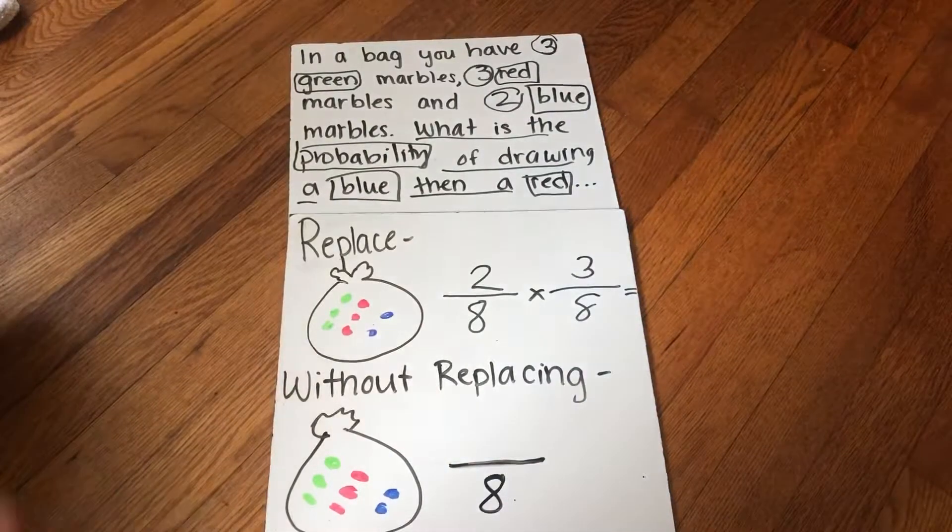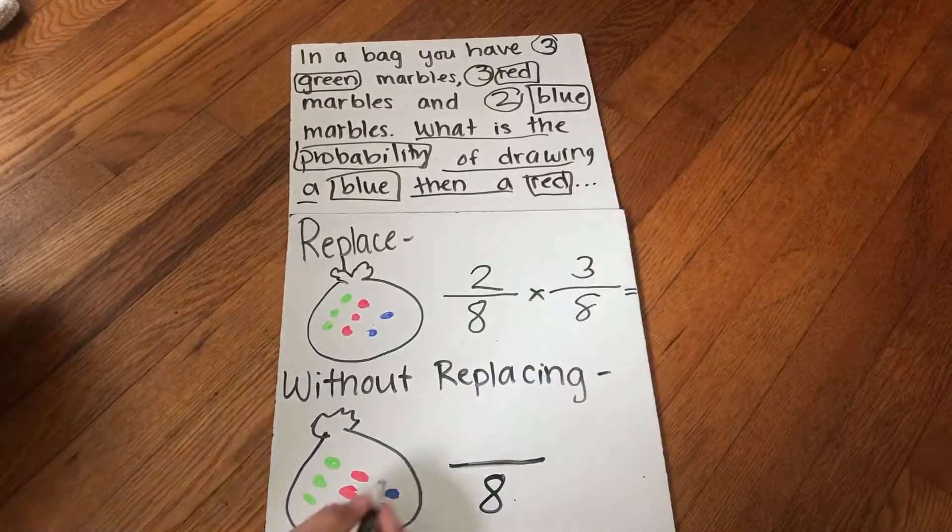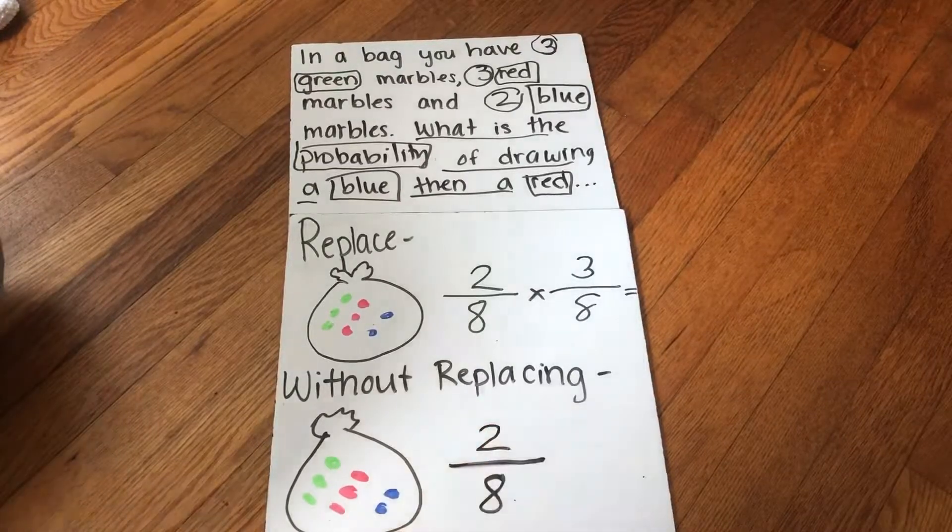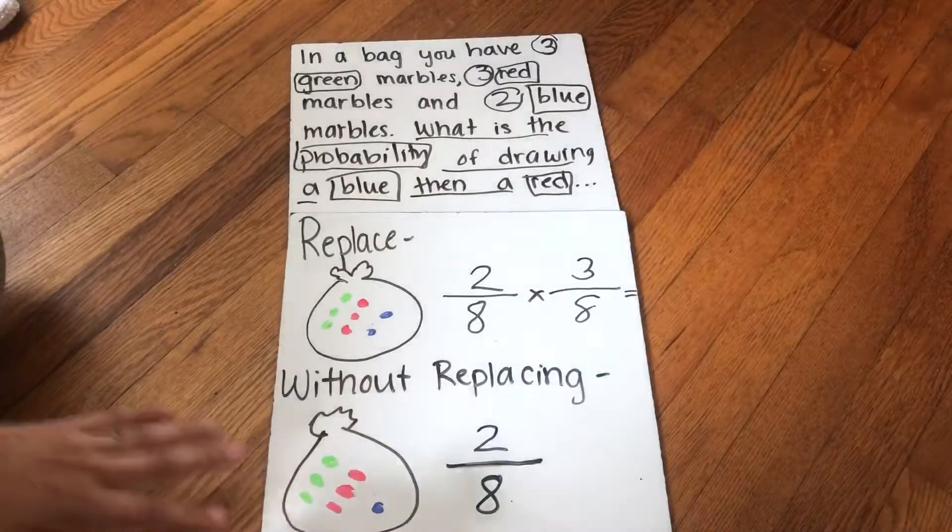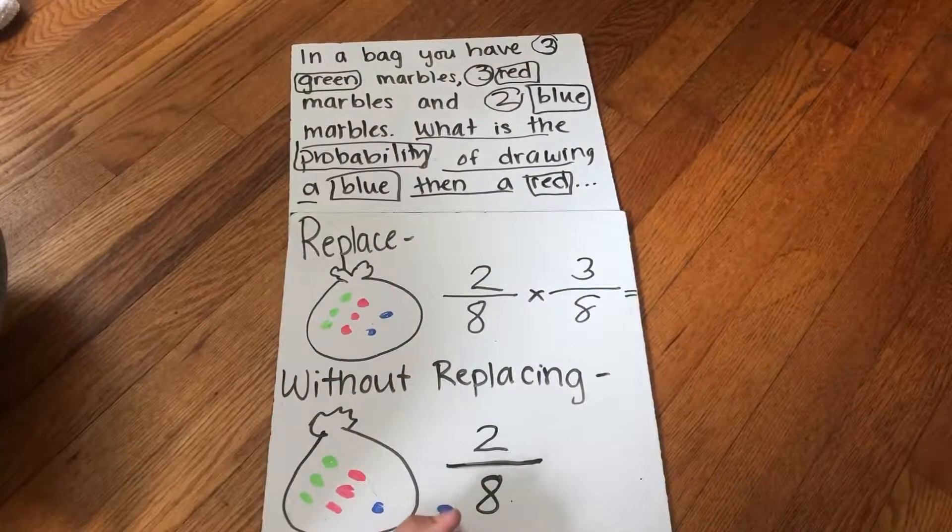And I'm gonna what's my likelihood of drawing a blue? Well, I have two blue in there. So in that first time I reached my hand in that bag, I picked out a blue and it's now outside the bag. It's not in there anymore.